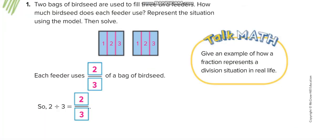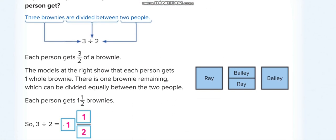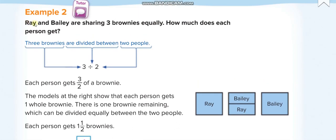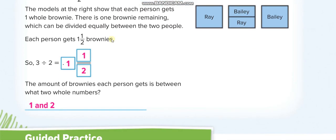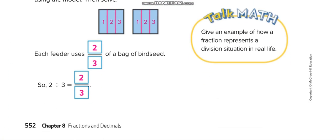Next: Ray and Belly are sharing three brownies equally. Each person gets one whole brownie and then from the third one they divide it, so each gets one and a half. This number lies between one and two — it's more than one but less than two.